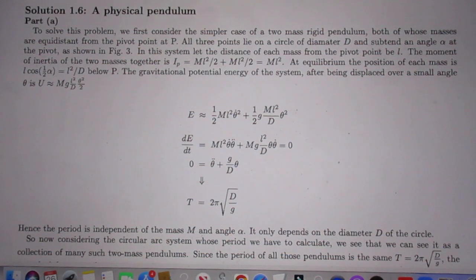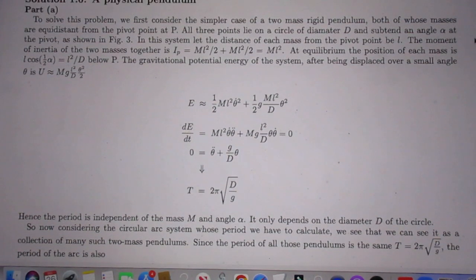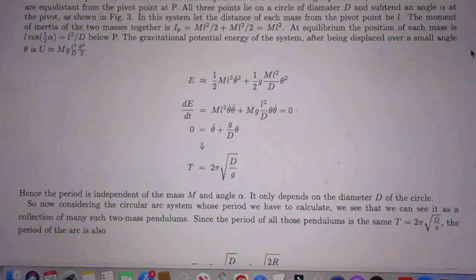I will first show you my solution, and then I show you the solution of the two people who sent me their solutions already within 48 hours that I posted the problem. So let's look here. To solve this problem, we first consider the simple case of a two-mass rigid pendulum, both of whose masses are equidistant from the pivot point at P. All three points lie on a circle of diameter D and subtend an angle alpha at the pivot, as shown in the figure below.